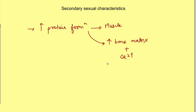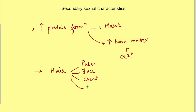Testosterone is responsible for male pattern distribution of hair — hair over the pubis which extends up to the umbilicus, appearance of beard over the face, hair over the chest, and male pattern baldness. It also causes thickening of the skin and increase in secretion from sebaceous glands, which is responsible for the appearance of acne at puberty.